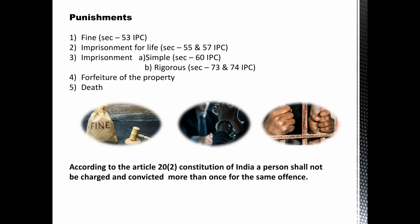Coming to punishments — there are various kinds. Fine is defined under Section 53 IPC; lifetime imprisonment under Sections 55 and 57 IPC; imprisonment — simple under Section 60 IPC, and rigorous, where hard labour is involved, under Sections 73 and 74 IPC. The others are seizing of property and death. An important point: according to Article 20(2) of the Constitution of India, a person who has already been convicted for a particular offence cannot be convicted again for the same offence.